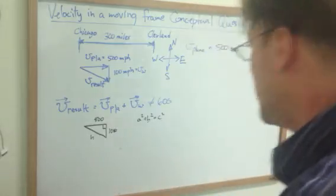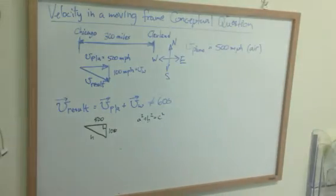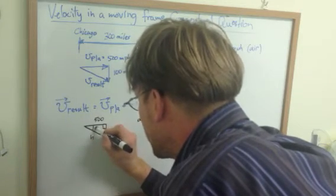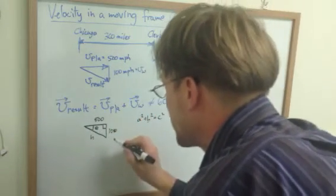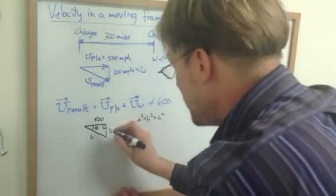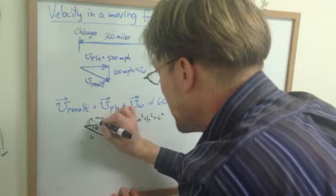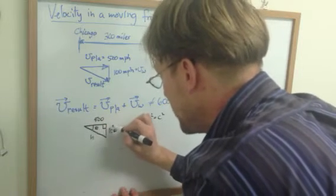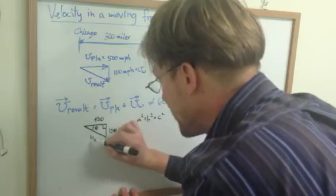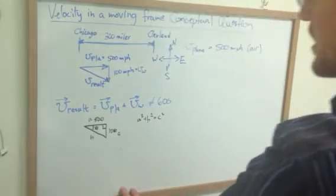And if we wanted to know the angle, say this angle theta that he drifted off course, we could also use, if this is angle theta, the side opposite of it is this side, that's the opposite, that's the hypotenuse, and this is the adjacent side.